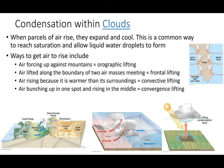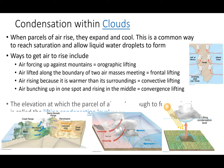A fourth mechanism is convergence lifting. Think of air sliding over smooth ocean surfaces on both sides of Florida's peninsula, then hitting the land — it slows due to friction, bunches up, and is forced upward. That's convergence lifting. Florida gets dumped on with rain all the time, partly for this reason.